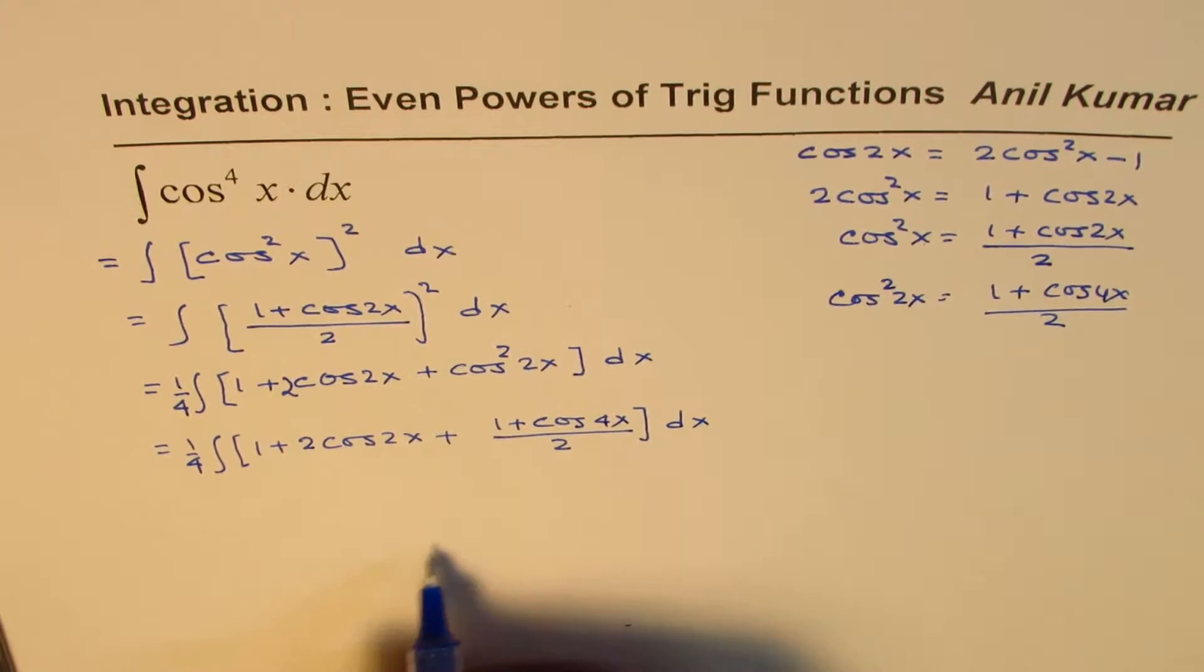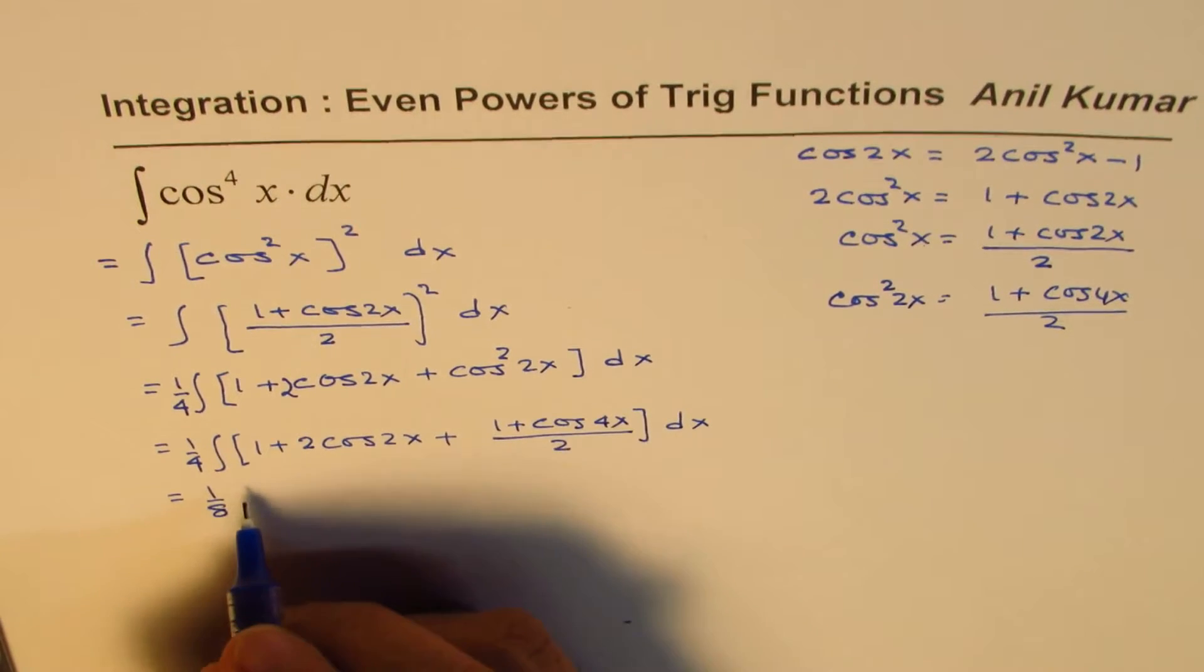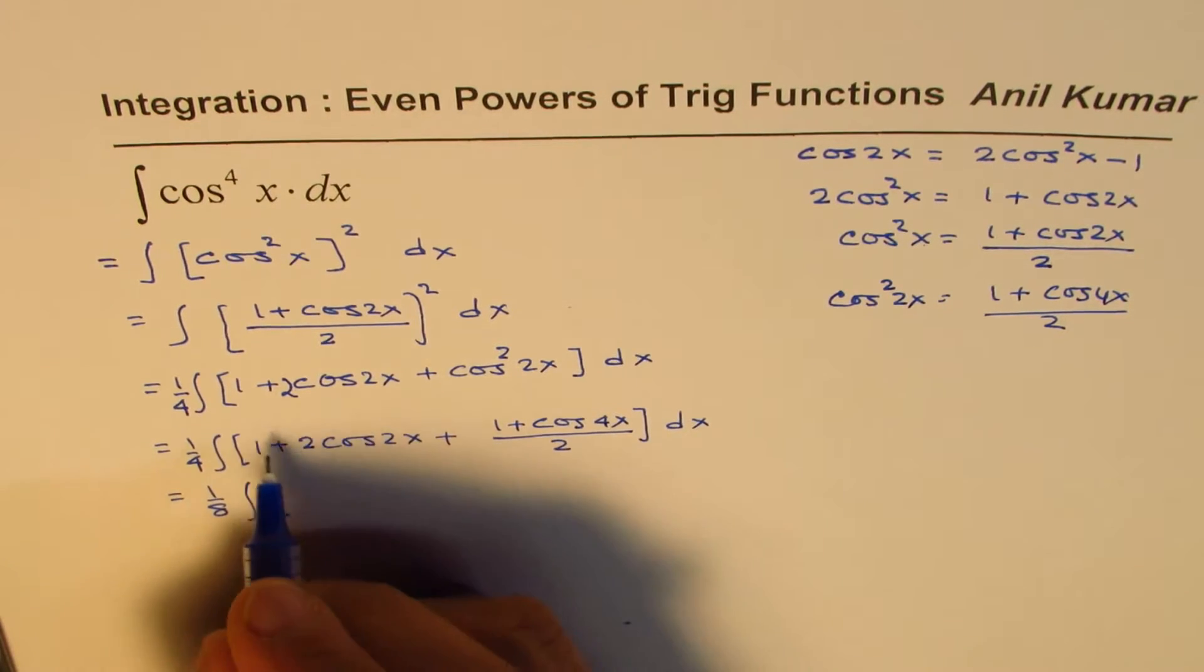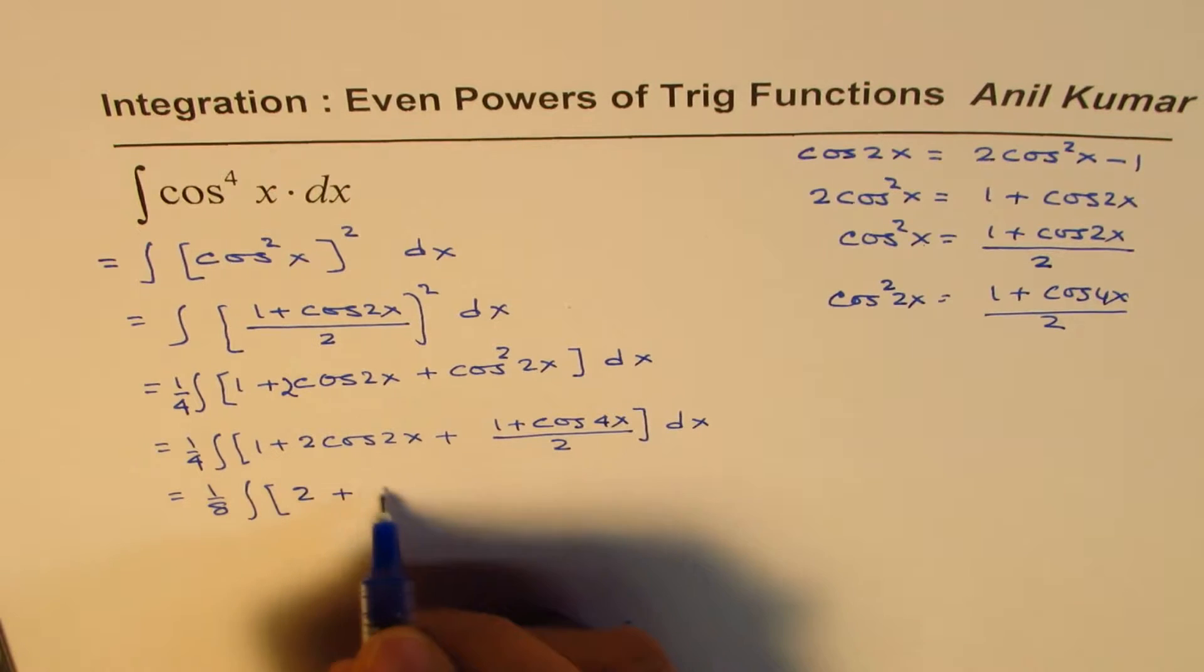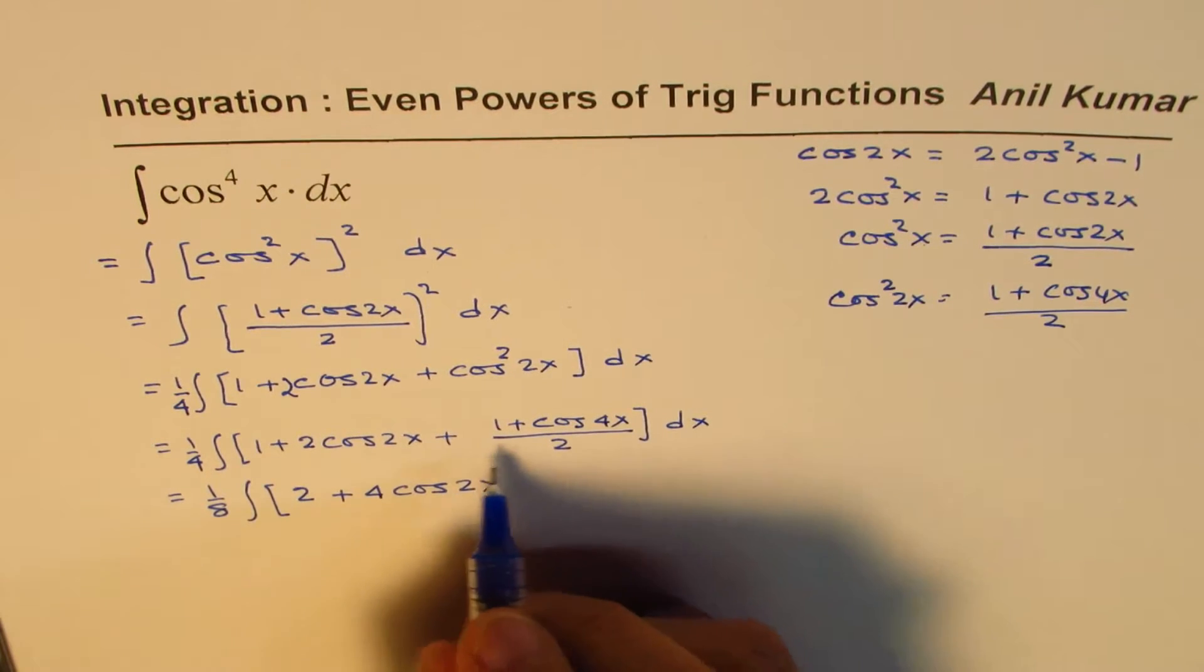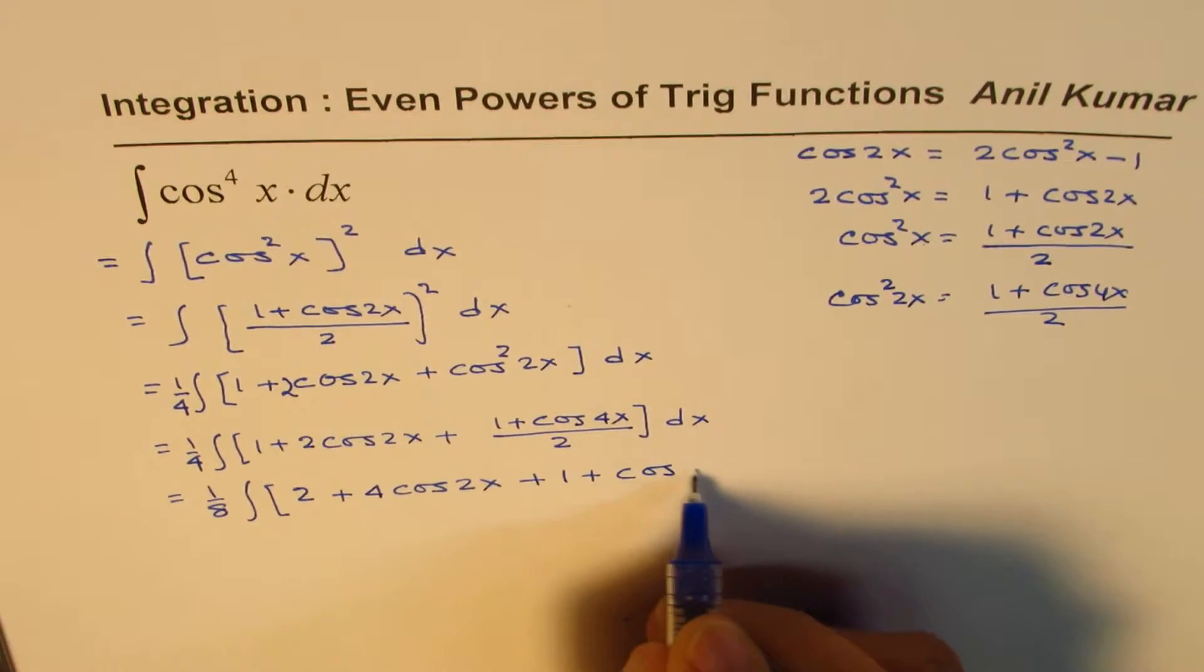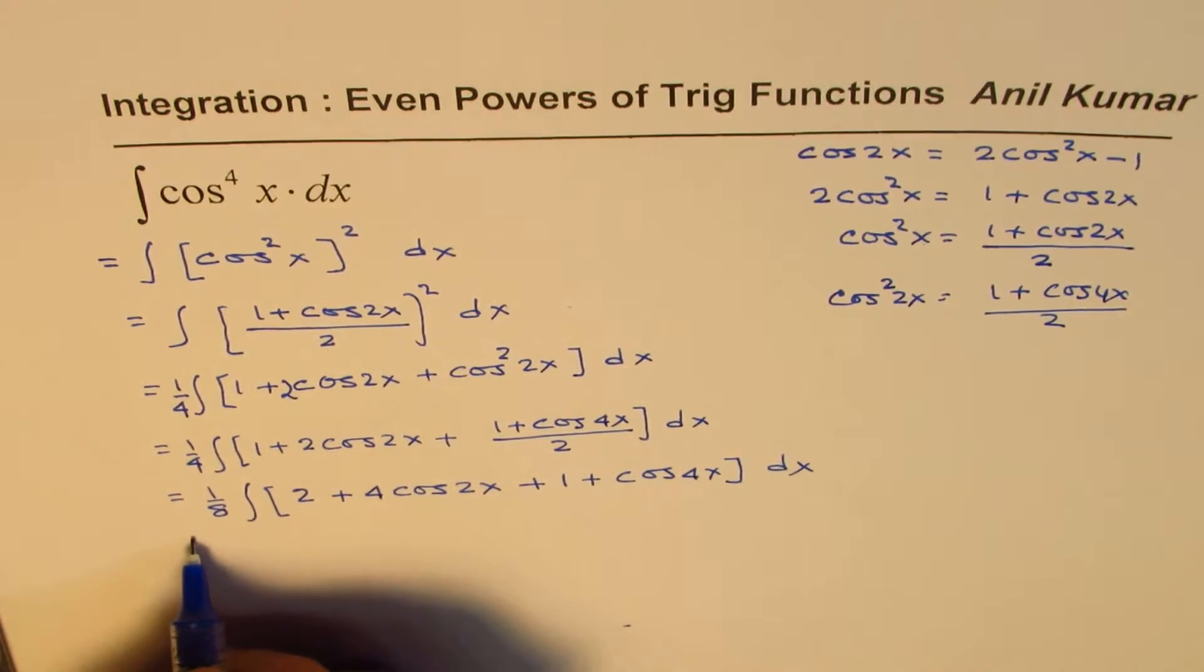To avoid fractions, we multiply by 2, giving 1/8. When we factor this out and multiply, we get 2 + 4cos(2x) + 1 + cos(4x), which is 3 + 4cos(2x) + cos(4x). This avoids fractions - a very important step.